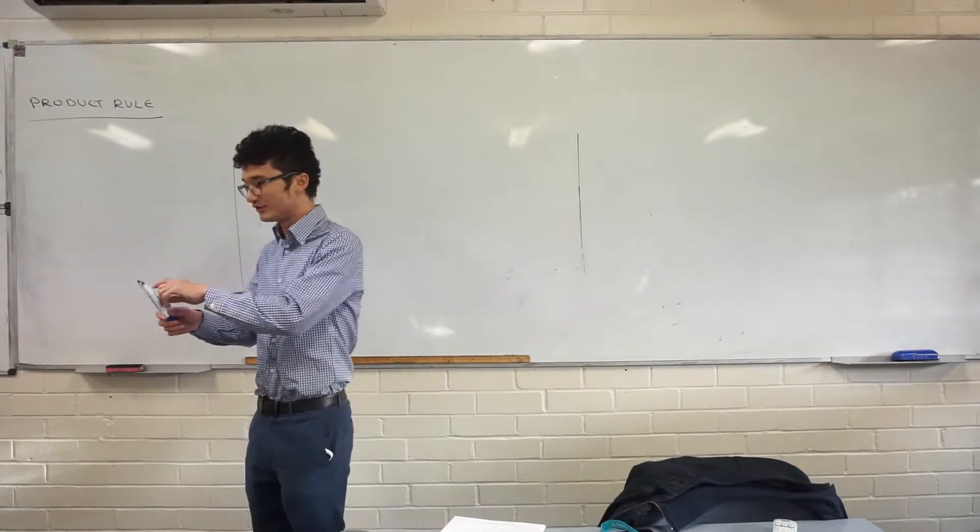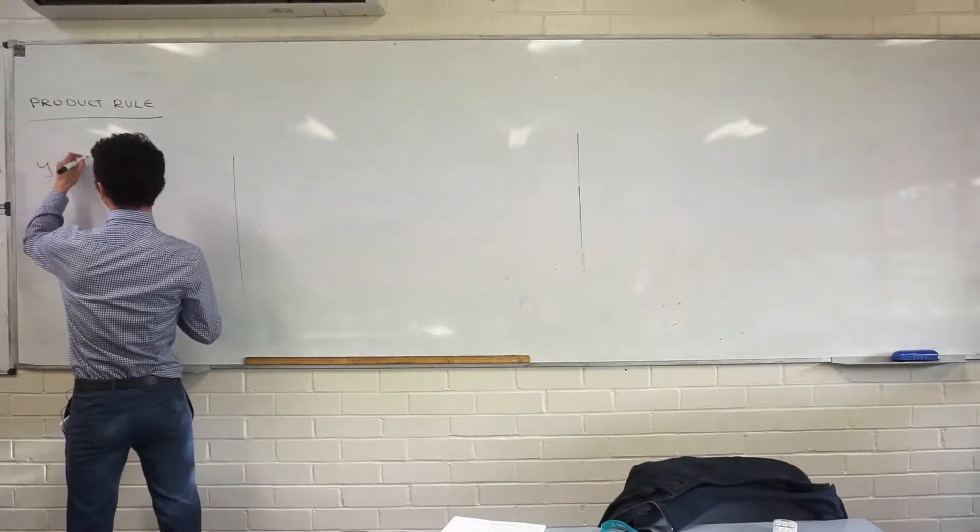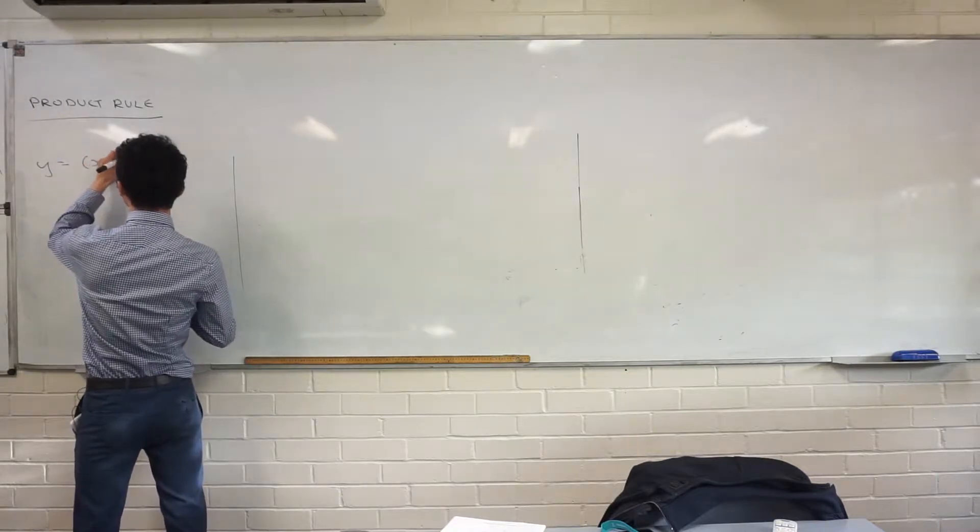Let's talk about differentiating. We've differentiated a function like this before. How did we do that? What did we have to do first?